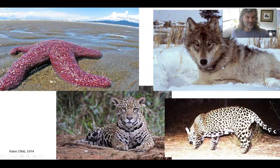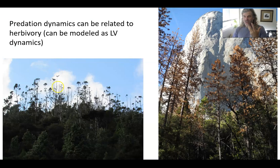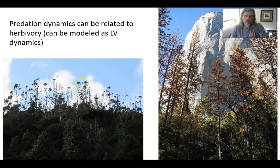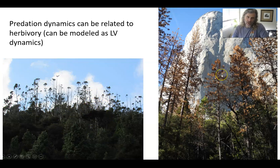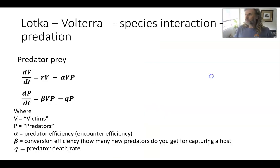A lot of what's understood about predator population dynamics comes from studying these kinds of organisms. It's still relevant to us. It is sometimes possible that predation dynamics can be related to Lotka-Volterra predator-prey models, and that can help us understand things like tree diseases — such as kauri disease in New Zealand — and bark beetle population dynamics in Yosemite and the Sierra Nevada.